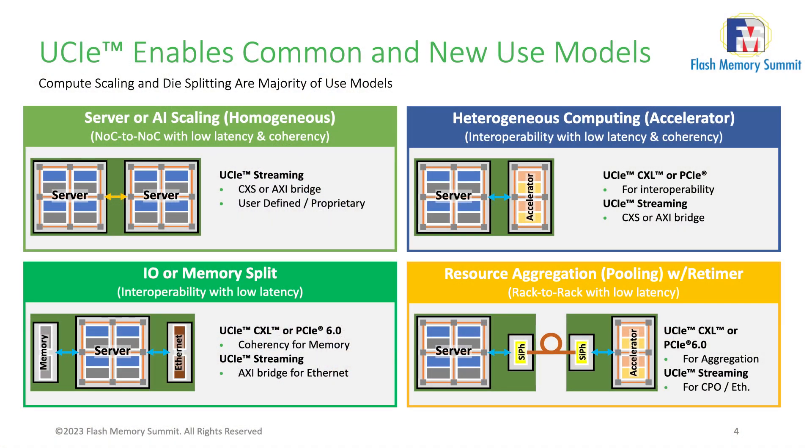All of these use cases can leverage and take advantage of the good characteristics of UCIe through the different options it supports — package options, bandwidth options, protocol options. There is also a fourth use case: UCIe retimers to expand the reach of UCIe outside of the package into other chips or racks. Together with co-packaged optics, this can be used in new data center architectures for resource aggregation and resource pooling use cases. UCIe has solutions for all of this, which is why it is so interesting.